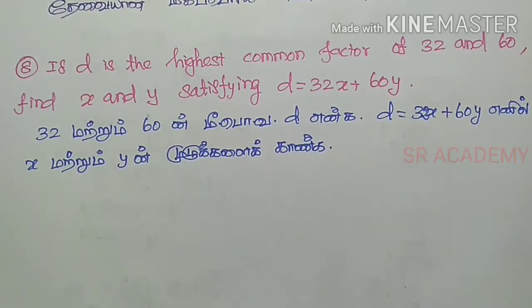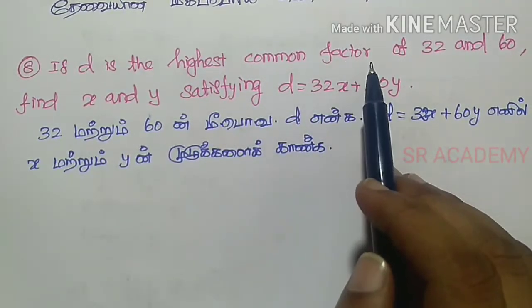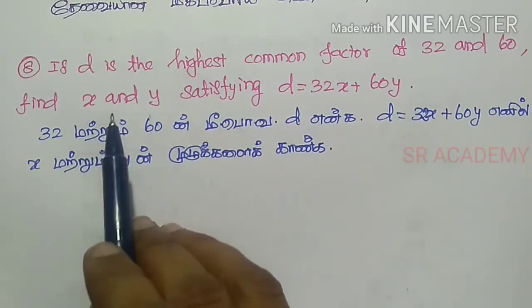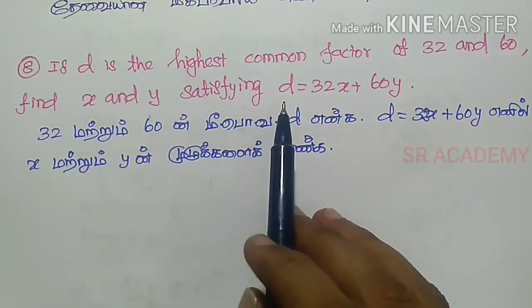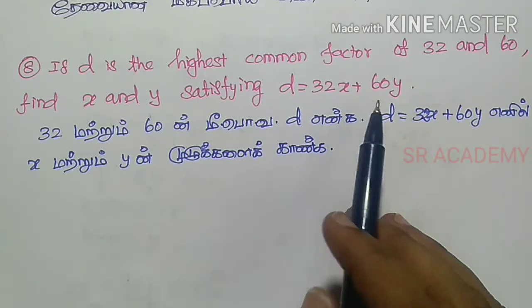Hello students. Question number 8: If D is the highest common factor of 32 and 60, find X and Y satisfying D equals 32X plus 60Y.